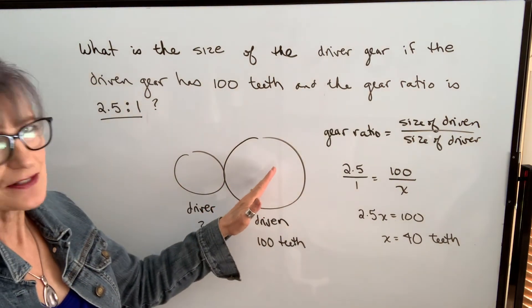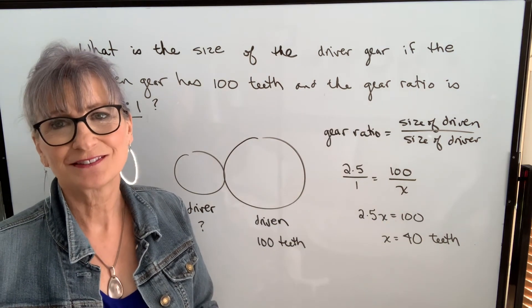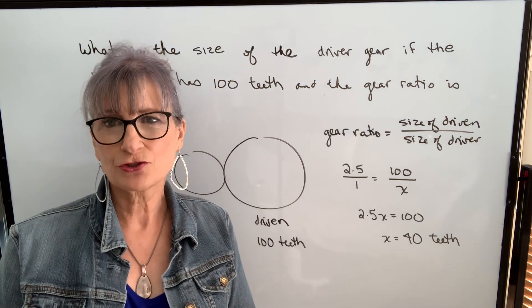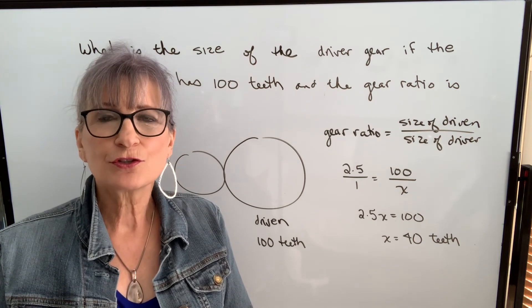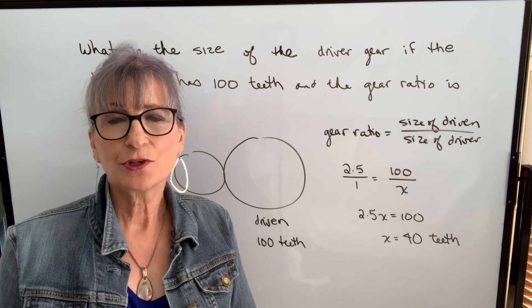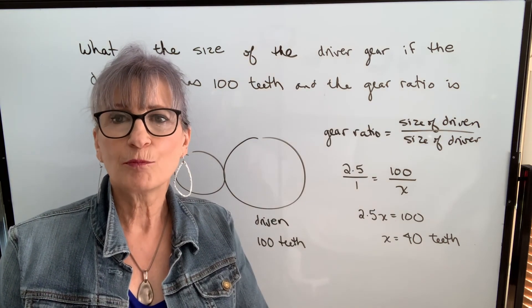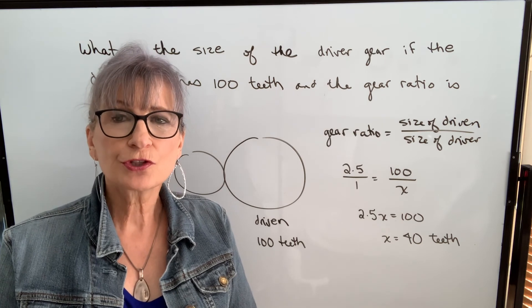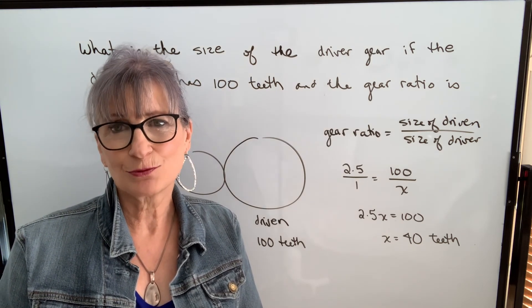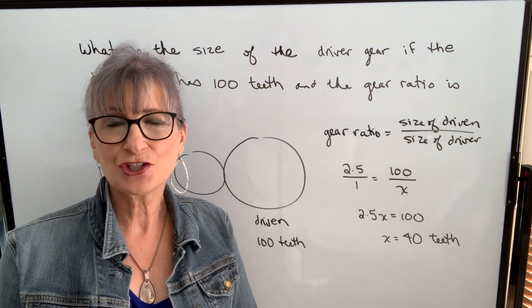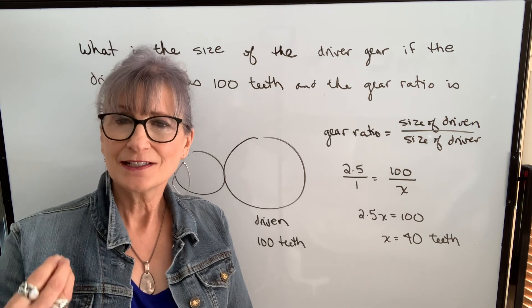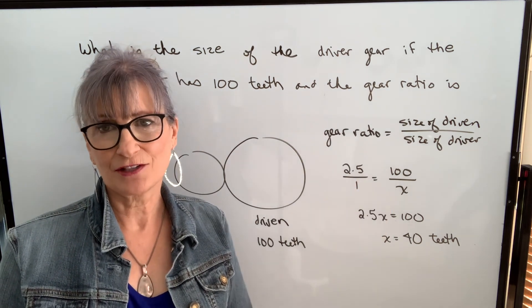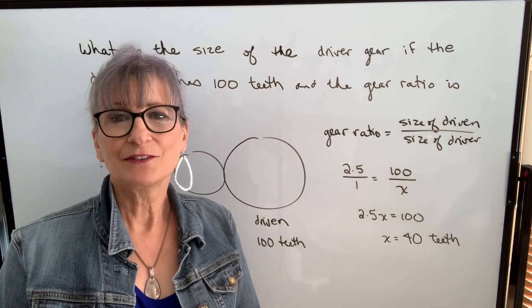Usually you're going to see reduction ratios when working with gear ratios, whether it's a transmission, a differential, or a gearbox. But don't assume it's always a reduction. For example, a transmission with overdrive would have a ratio of point-something to 1 in fifth gear. Keep the definition in mind: when using speeds, it's speed of driver divided by speed of driven; when using sizes, it's size of driven divided by size of driver. It gets confusing because it flips, but understanding the definition will keep you on track.